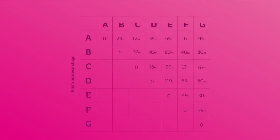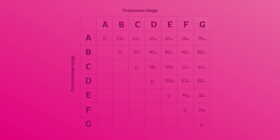This example shows the distance that goods travel between process stages. You'll notice that there are figures in the top right half but not in the bottom left. This Root Planning Chart reflects a one-way layout where goods do not travel backwards on the line.